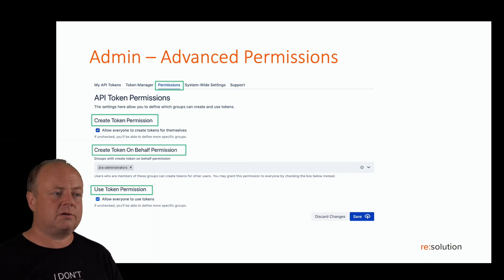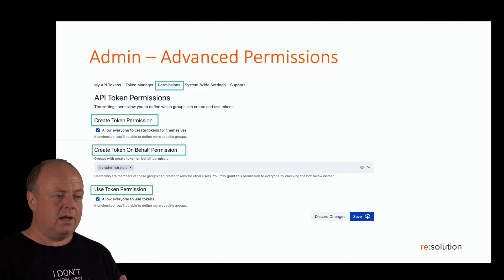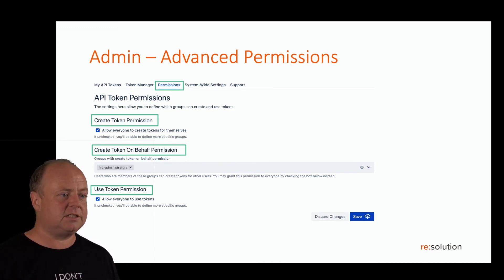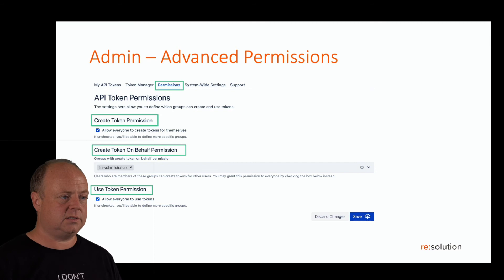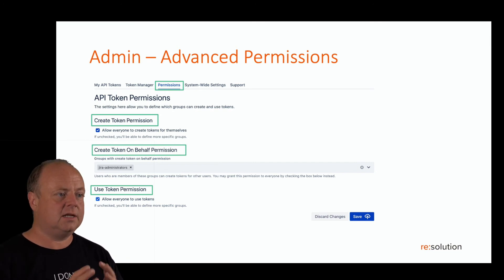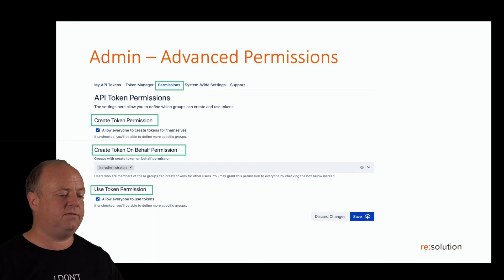Or you can create a much more controlled approach where no normal user can create tokens — only the Jira administrators group can create tokens, and they can also create tokens on behalf of other users. Normal users can then use those tokens. There's a variety of combinations you can achieve with these settings.